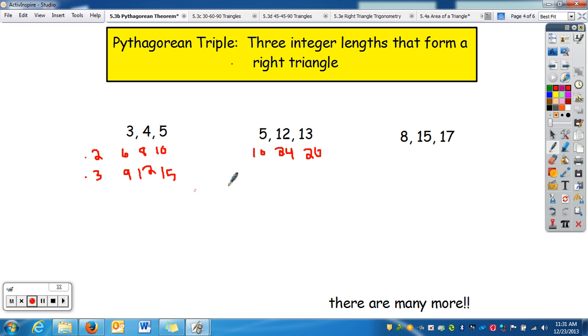and 26, and so forth. So, all the multiples are also a triple. Again, these are just kind of like a time saver. It's a time saver because if you have like 3 and 5, you know the other length has to be 4, and you don't have to go through the Pythagorean theorem.